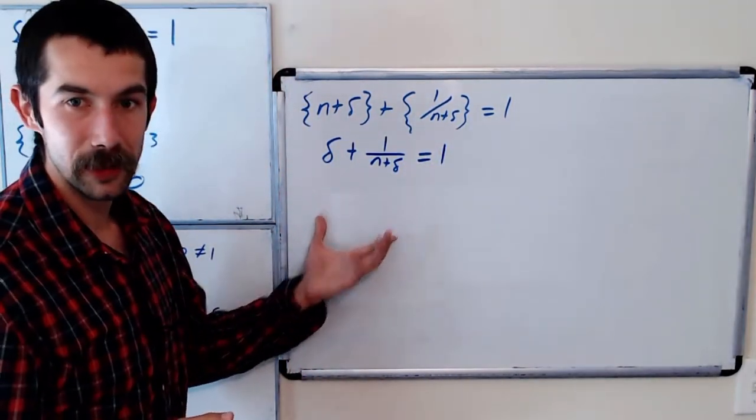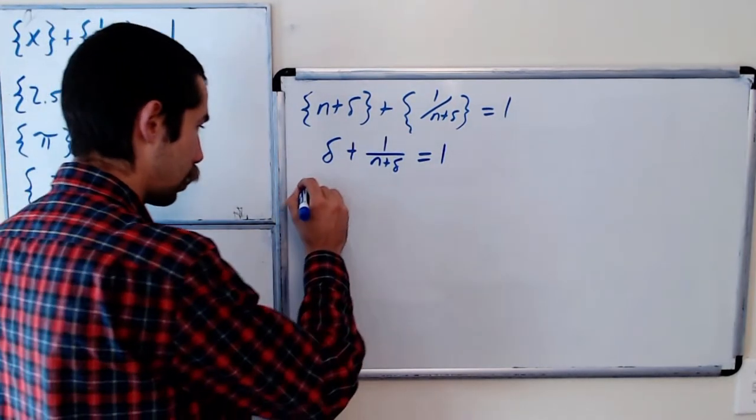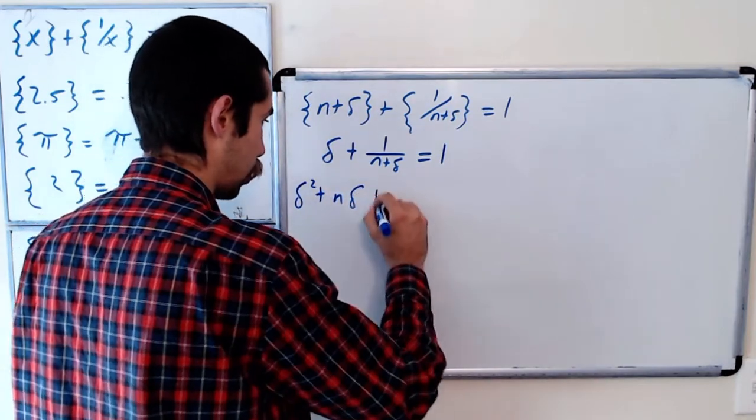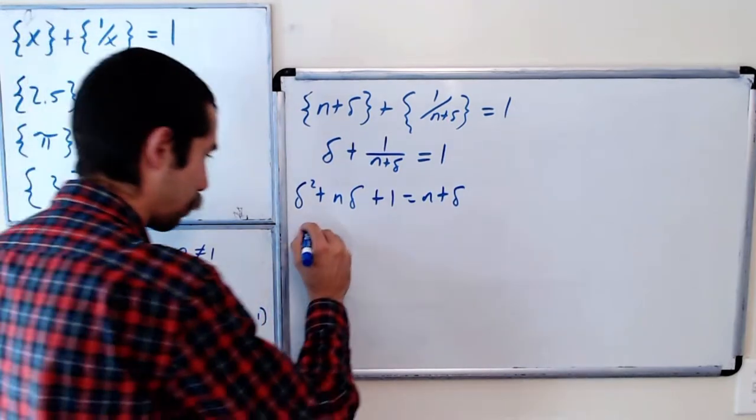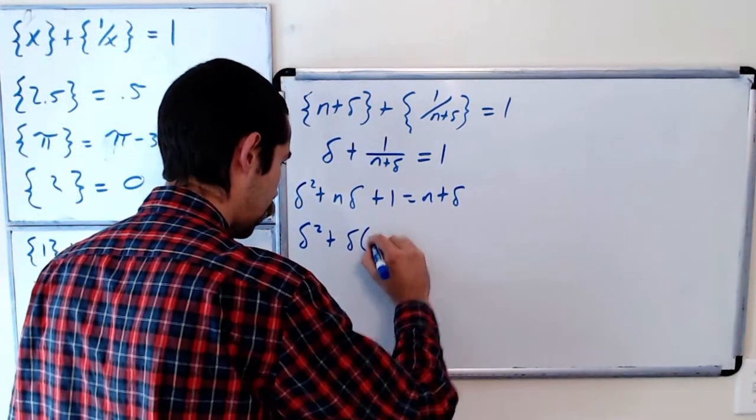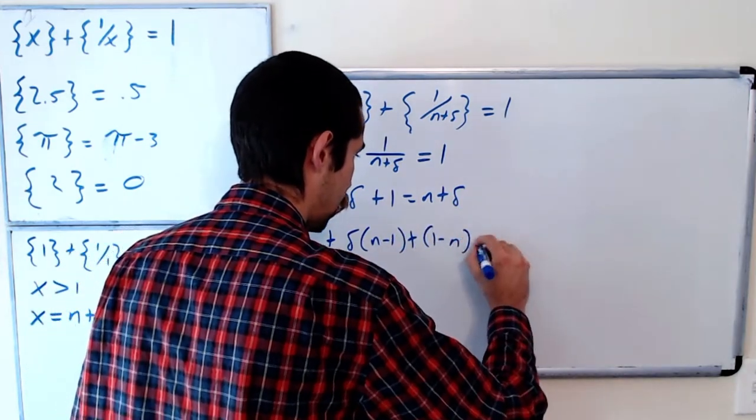Okay and we want to solve this equation so let's multiply everything by n plus delta. So delta squared plus n delta plus 1 equals n plus delta and bringing everything to one side we have delta squared plus delta times n minus 1 plus 1 minus n is equal to 0.